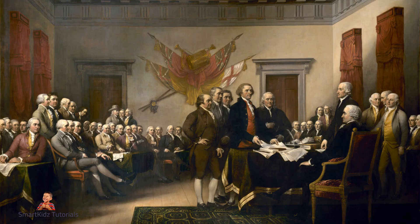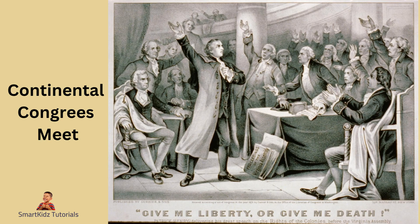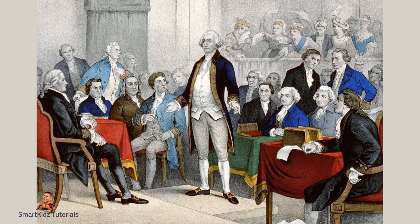Why did the First and Second Continental Congress meet? The First Continental Congress and the Second Continental Congress were important gatherings of representatives from the thirteen American colonies during the time of the American Revolution. The First Continental Congress took place in 1774 in response to the British government's harsh actions, such as the Intolerable Acts, against the colonies. Delegates from most of the colonies met in Philadelphia to discuss their grievances and come up with a unified response. They wanted to find a peaceful resolution, drafted a petition to King George III expressing their concerns, and also called for a boycott of British goods. The First Continental Congress helped to unite the colonies and set the stage for further actions against British rule.